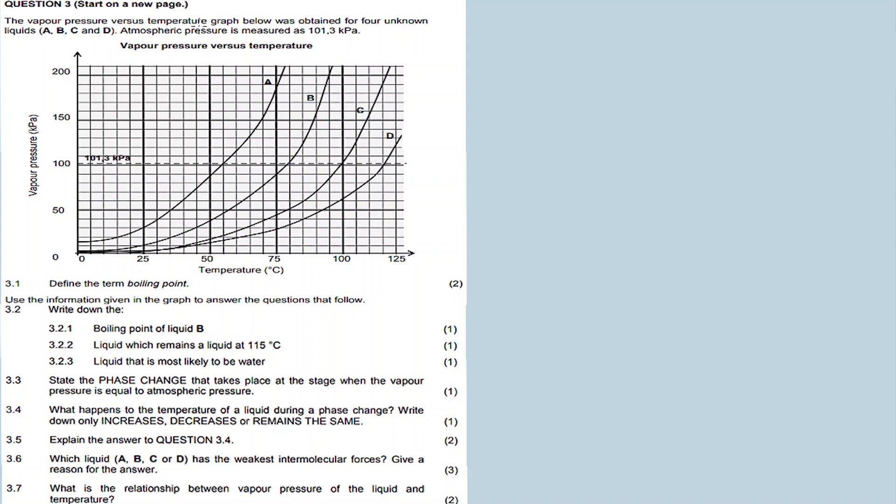Question three: The vapor pressure versus temperature graph below was obtained for four unknown liquids A, B, C, and D. The atmospheric pressure is measured as 101.3 kilopascals. The x-axis is temperature in degrees Celsius and the y-axis is vapor pressure. For every liquid, as the temperature increases, so does the vapor pressure.